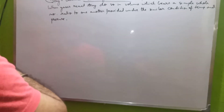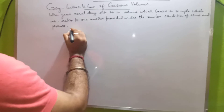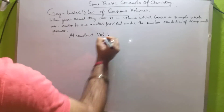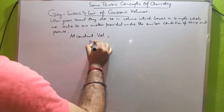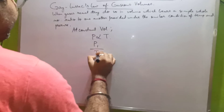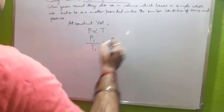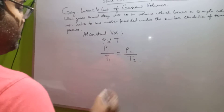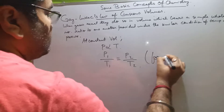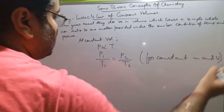Suppose at constant volume for a particular gaseous reactor — as pressure increases, temperature will also increase. From there we can write: P₁/T₁ = P₂/T₂, where P₁ and T₁ are the initial pressure and temperature, and P₂ and T₂ are the final pressure and temperature. For constant temperature, n is the number of moles and V is the volume of the gas.